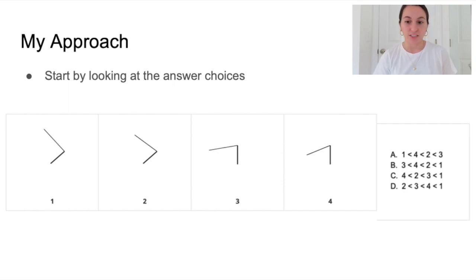So now we can look at the rest of the angles to see which one is the smallest. 3, 4, or 2. And you can see that 4 is the smallest. So if you look at the answer choices you can see that C has angle 4 as the smallest and angle 1 as the largest.